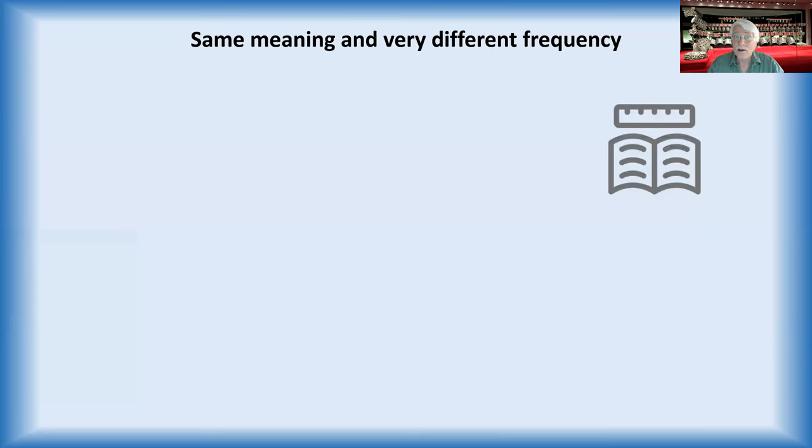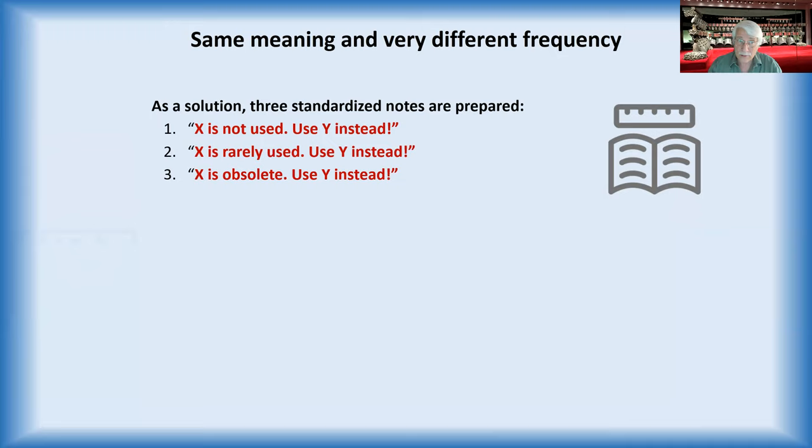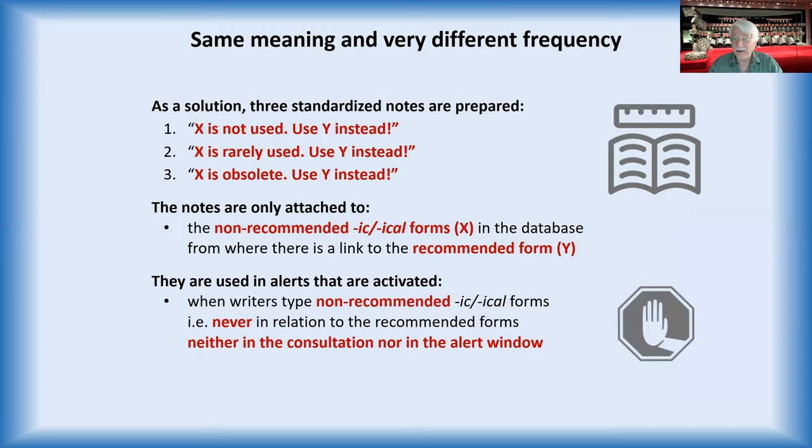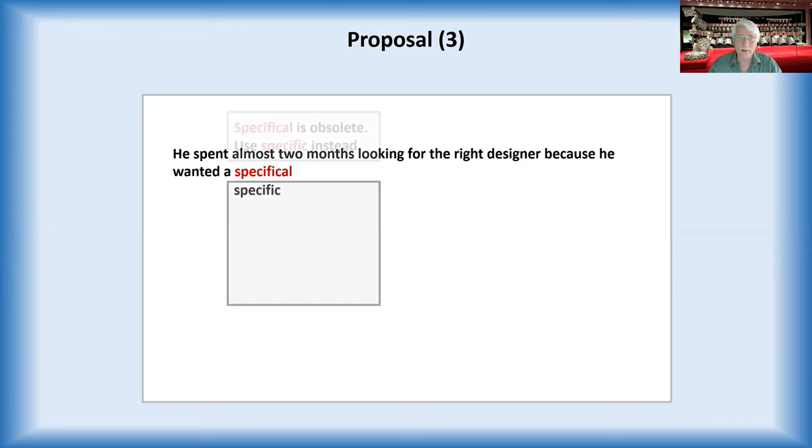Same meaning and very different frequency. Then we propose three notes. X is not used, use Y instead. X is rarely used, use Y instead, or is obsolete. You can make four, you can reduce it to two. That is not the question. But what we do here is that we give a recommendation and we explain why. And then they're put into all the non-recommended forms in the database, not the recommended one. And they're also shown in relation to those. Let's see. He spent almost two months for the right designer because he wanted a specifical. Specifical is obsolete. Use specific instead. And you could just use it. Or if you want to know something specific, you can consult the dictionary like this. These are the proposals.